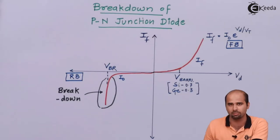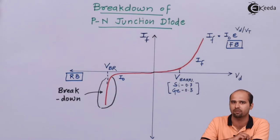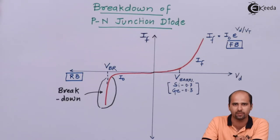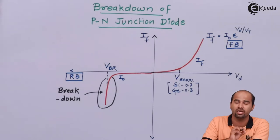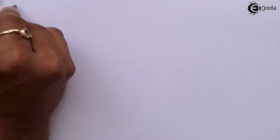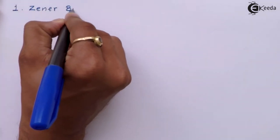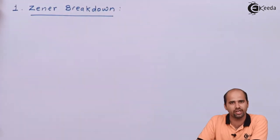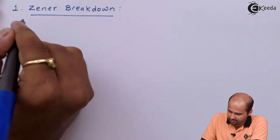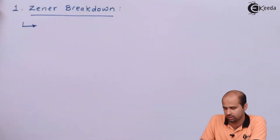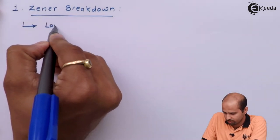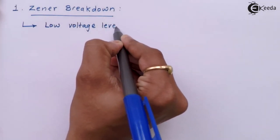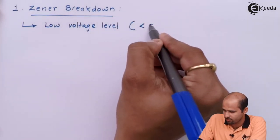This breakdown mechanism of PN junction diode is divided into two parts: one is low voltage breakdown and another is high voltage breakdown. Low voltage breakdown is called zener breakdown and high voltage breakdown is called avalanche breakdown. Zener breakdown occurs at low voltage level, generally less than 5 volts.